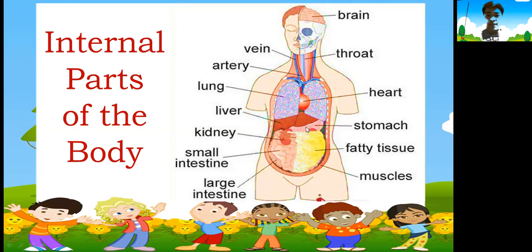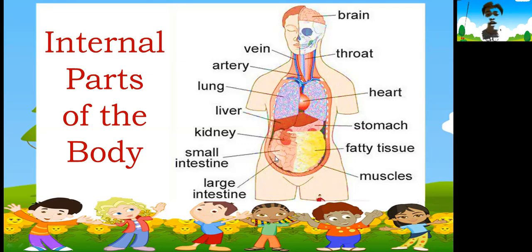Then we have stomach. Stomach actually does 10% of digestion. We have fatty tissue — fatty tissue protects our internal organs. And we have muscles — these muscles protect all our internal organs. Large intestine absorbs water and salt from undigested food. And because we have large intestine, we also have small intestine. Small intestine does 90% of digestion, while stomach does 10%.